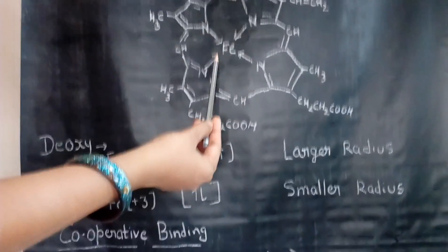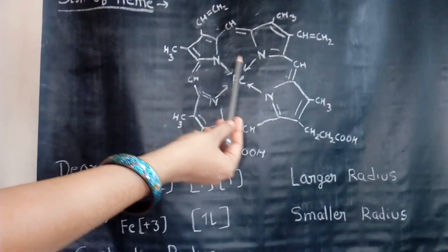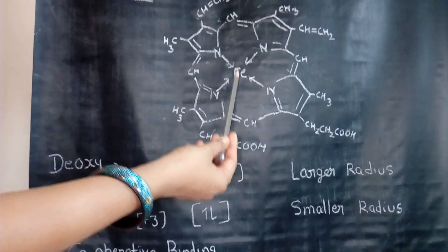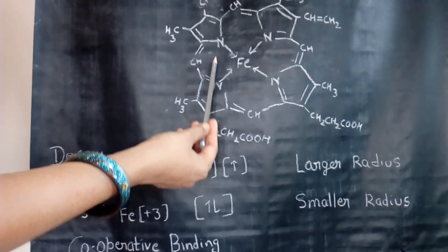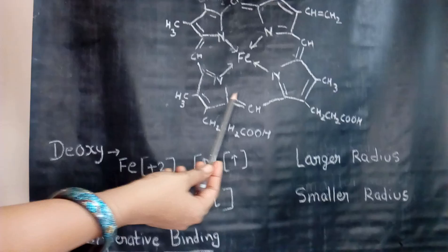It does not fit in the hole made by the nitrogen atoms, so it remains slightly above the hole. And it does not form a planar structure. It forms a square pyramidal structure.